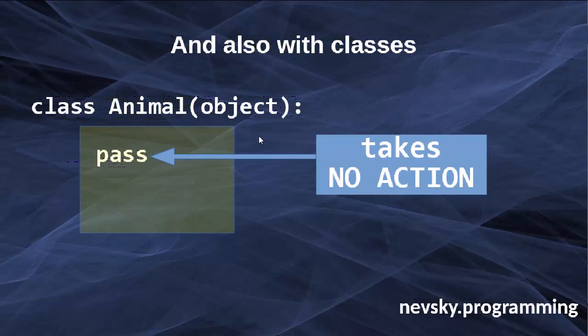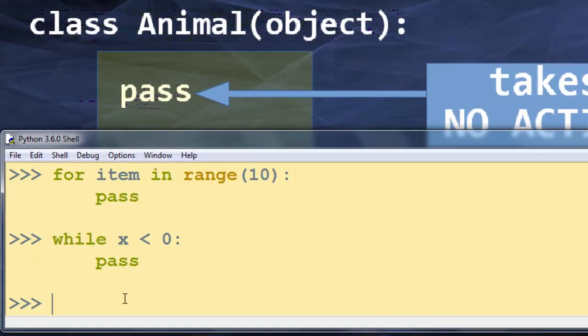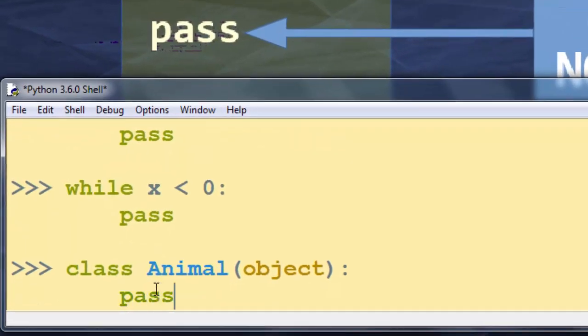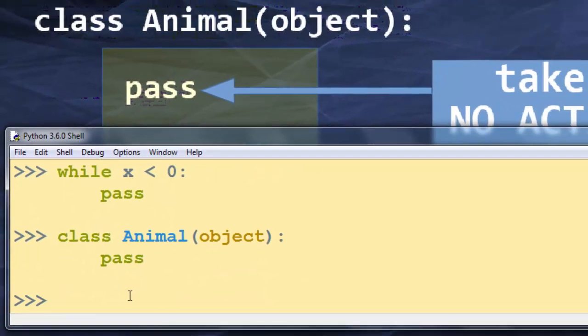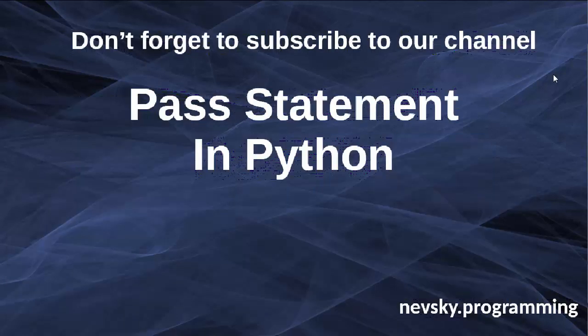Also we can use the pass statement when we're working with classes. If you're making a class and you don't want to provide its own code right now you can just use the pass statement. Let's type this code: class Animal. That's all in this example. Don't forget to subscribe to my channel, thanks for watching.